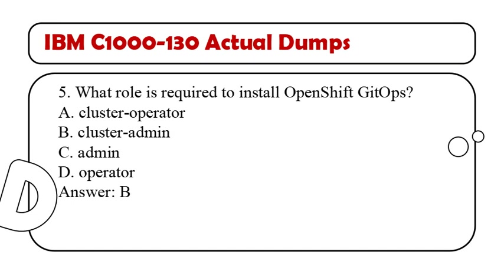Question 5. What role is required to install OpenShift GitOps? A. Cluster operator. B. Cluster admin. C. Admin. D. Operator. Answer: B.